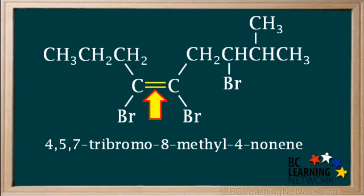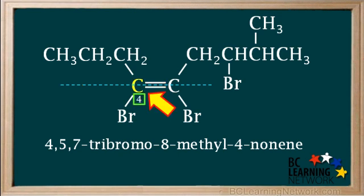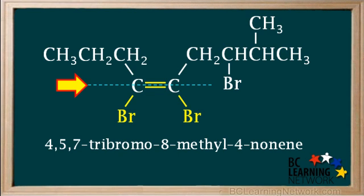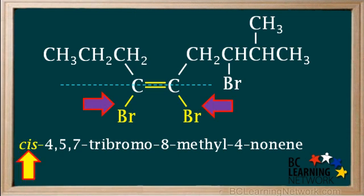Now we focus on the double bond and draw an imaginary line through it. We see that carbon number four, the carbon on the left side of the double bond, has two different groups attached to it. And carbon number five, the carbon on the right side of the double bond, also has two different groups attached to it. In this situation, we must decide whether this compound is a cis or trans isomer. Looking at the imaginary line drawn through the double bond, we see that the identical groups — the two bromos in this case — are on the same side of the line. Therefore, this is the cis isomer, and we write cis and a dash in front of the four-five-seven. When cis or trans are added to a name, they're usually written in italics.